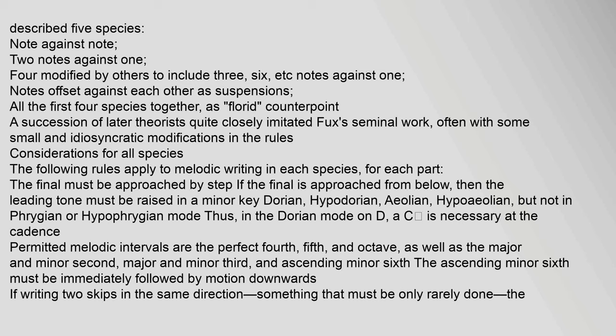Considerations for all species: the following rules apply to melodic writing in each species. For each part, the final must be approached by step. If the final is approached from below, the leading tone must be raised in a minor key — Dorian, Hypodorian, Aeolian, Hypoaeolian — but not in Phrygian or Hypophrygian mode. Thus, in the Dorian mode on D, a C-sharp is necessary at the cadence. Permitted melodic intervals are the perfect fourth, fifth, and octave, as well as the major and minor second, major and minor third, and ascending minor sixth.